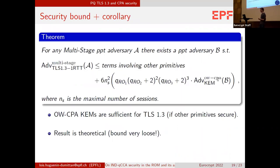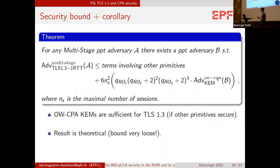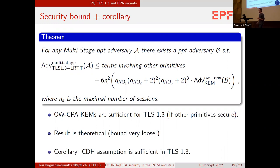The bound we get shows in theory that one-way CPA KEMs are sufficient for TLS 1.3 to be secure. The bound is very non-tight — we have the number of queries to the random oracle nearly to the sixth power in the bound. So the result is theoretical, but it still solves an open question. As a corollary, the CDH assumption is sufficient for TLS 1.3 to be secure, if the other primitives are secure as well.